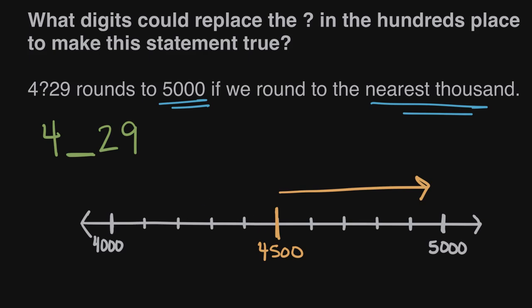And so we could try 4,000, let's just put a 5 in. 4,529 would be right after 4,500, somewhere about like this. That is closer, just barely, but it's closer to 5,000. So 5 works. 5 is a digit that we could use.